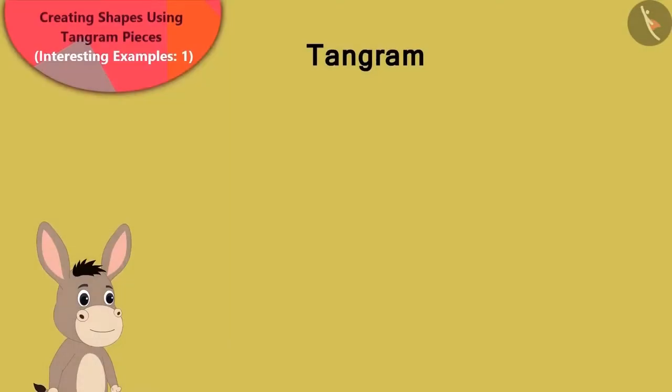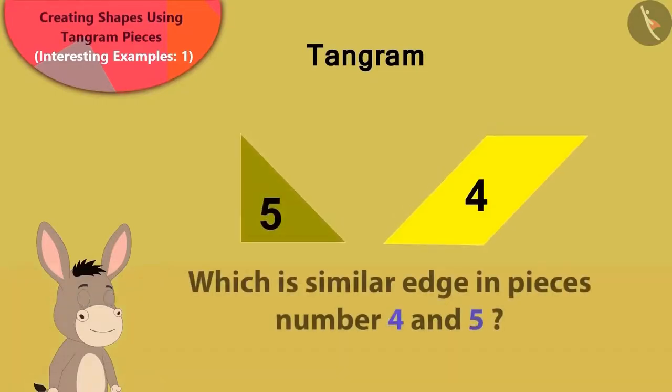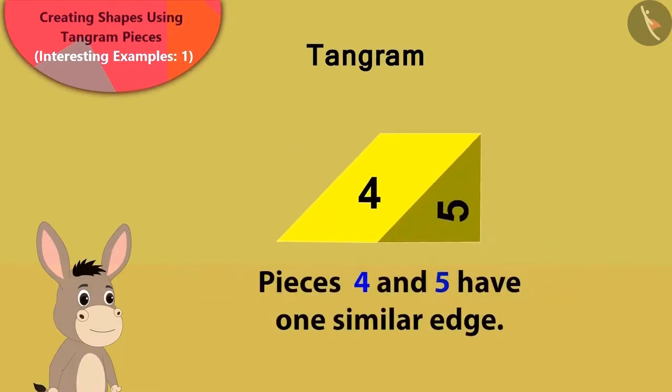Now, Bhola said that pieces number 4 and 5 have one similar edge. Children, can you recognize them? Yes! This answer is absolutely correct!